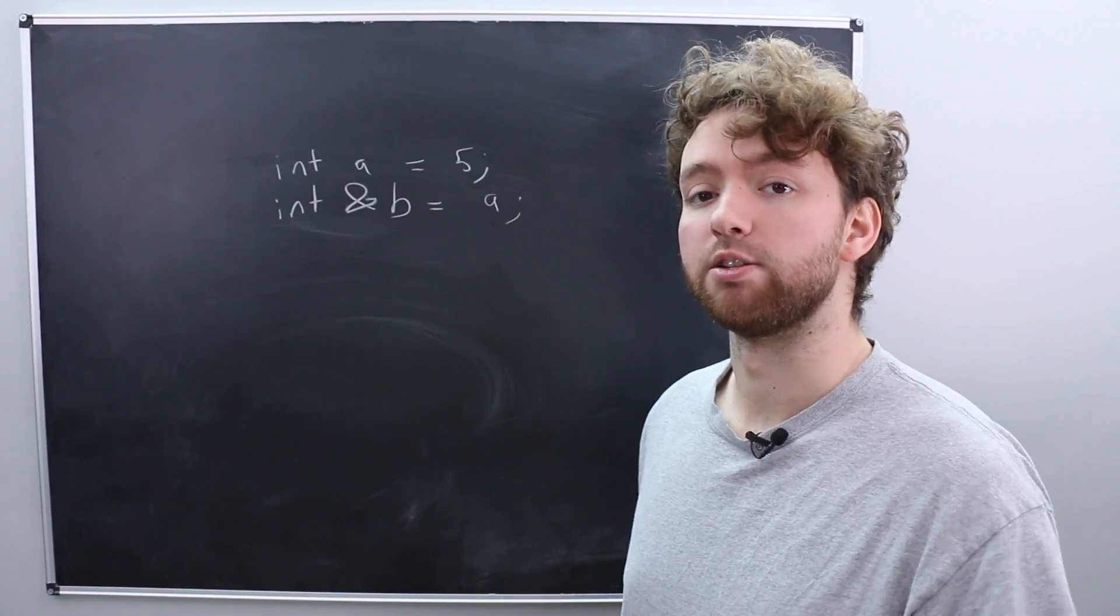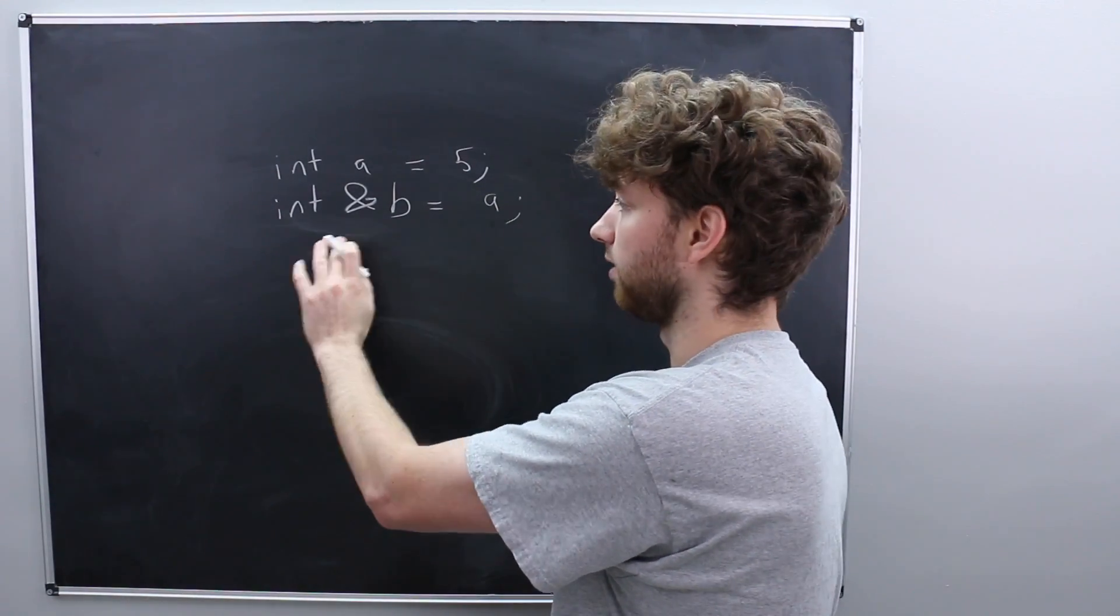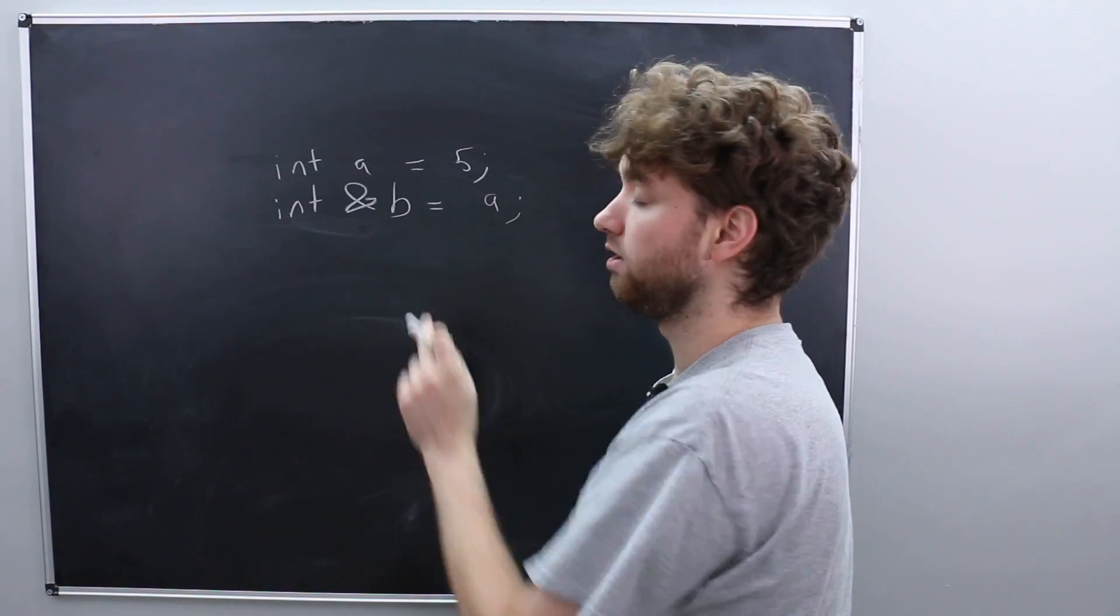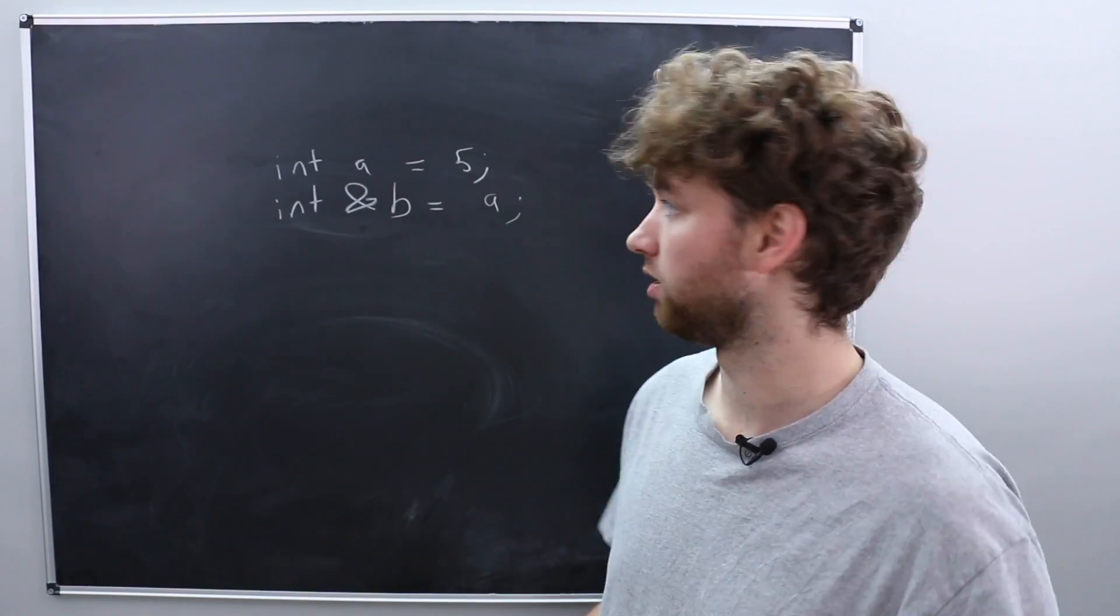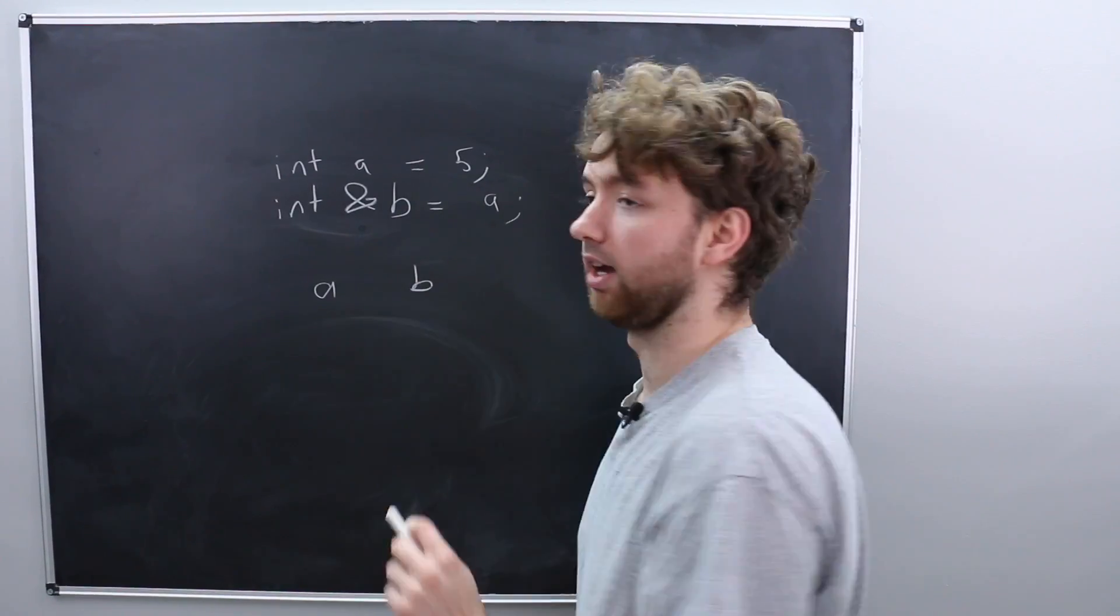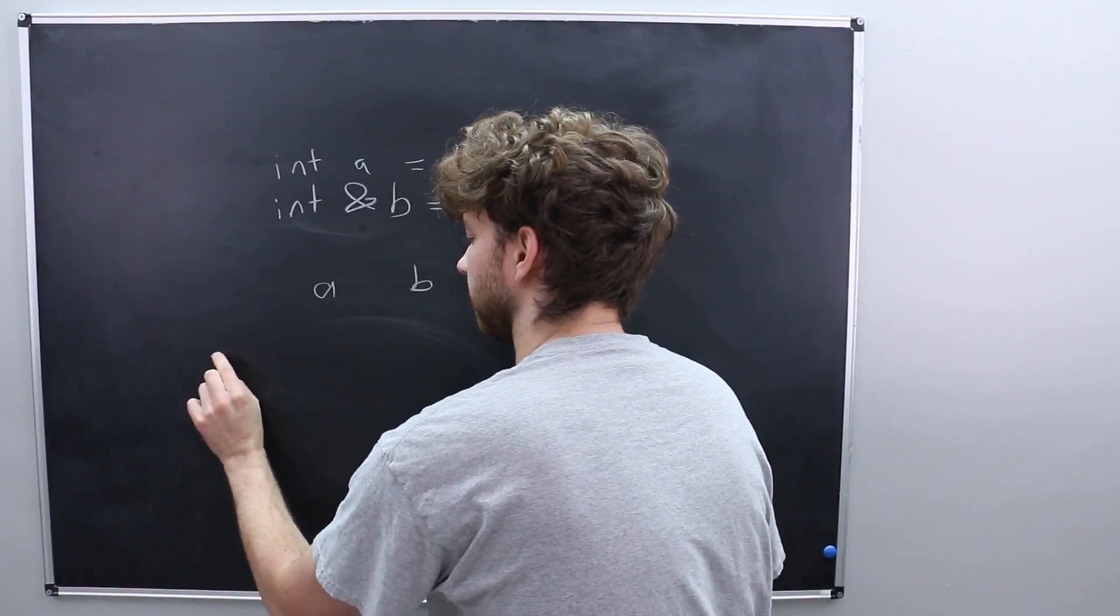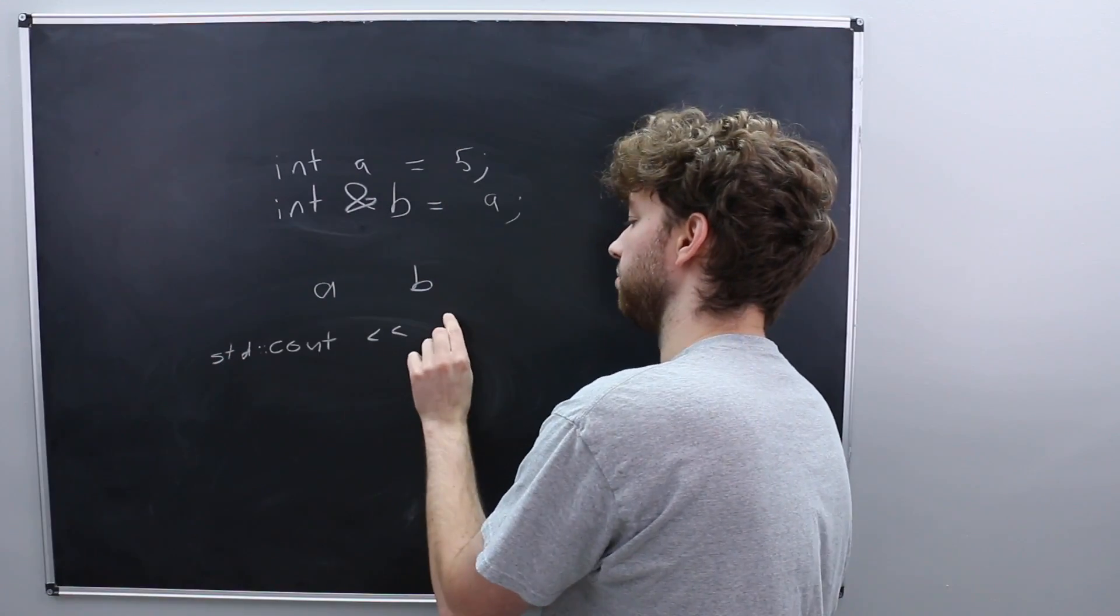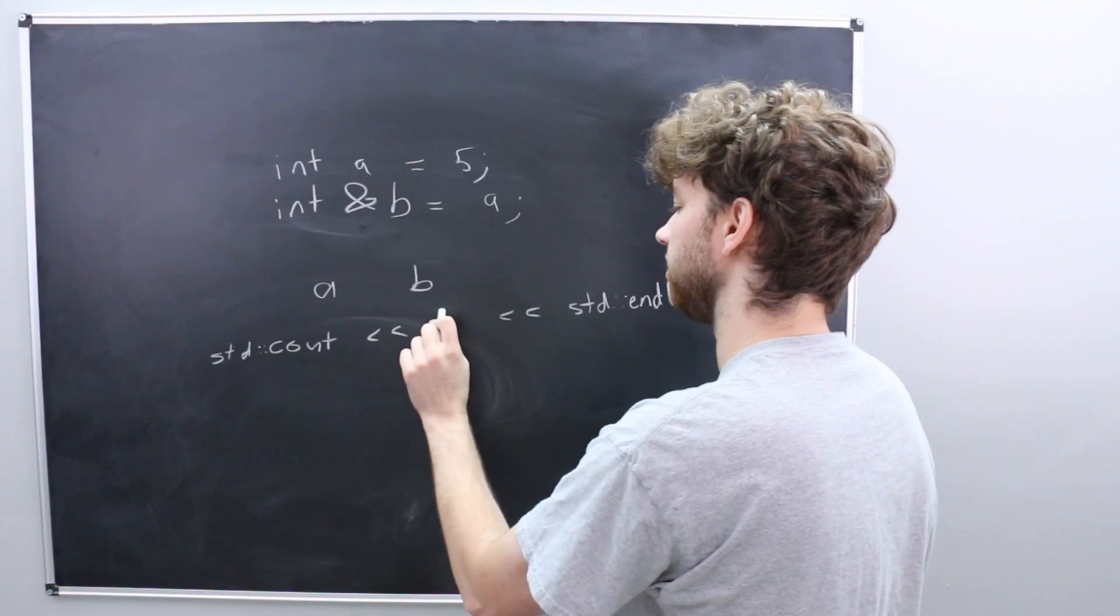So the important thing to realize when you're working with references is that there is some syntax you have to know when you're creating the reference, just that ampersand. But when you actually use the reference, you don't have to do anything special at all. So you can treat a and b as the same exact thing. What that means is if you wanted to do some output, you could output a, and then you could follow it up with an end line. You could output b.